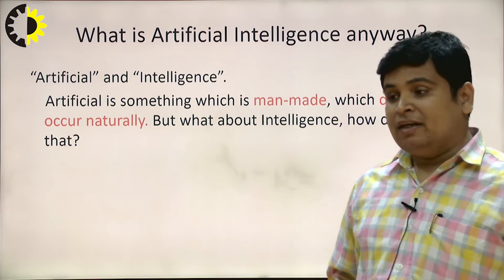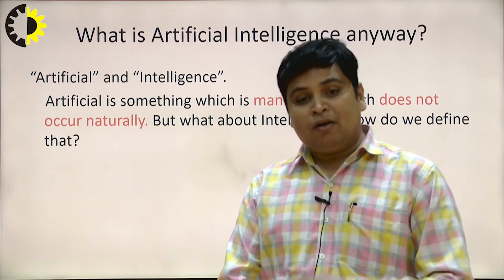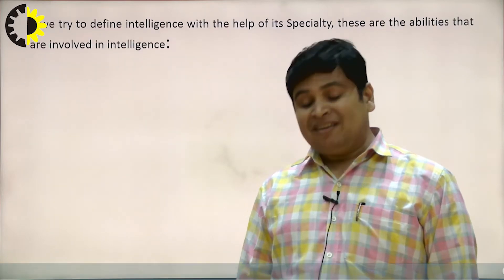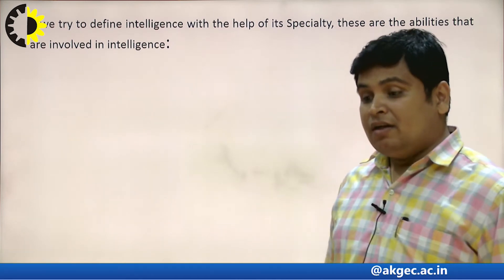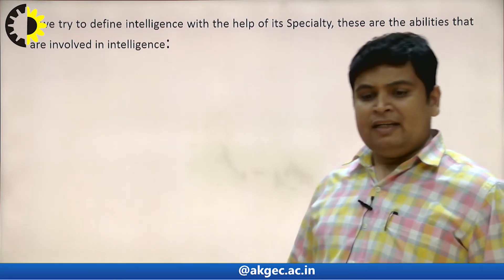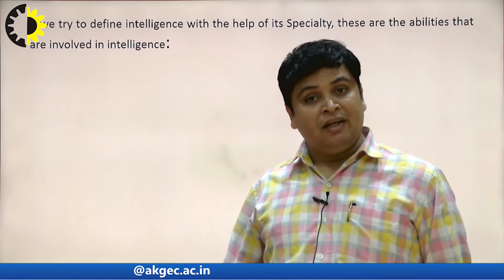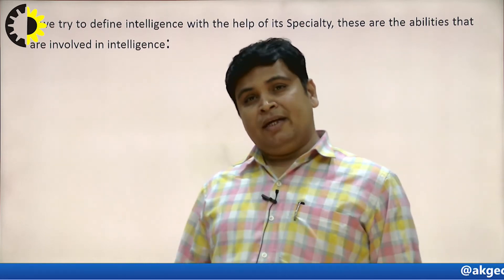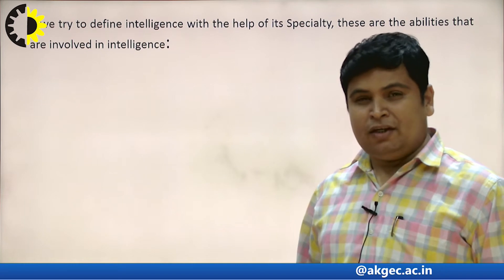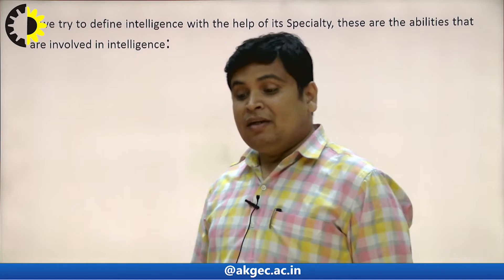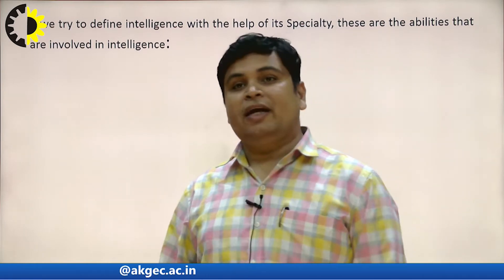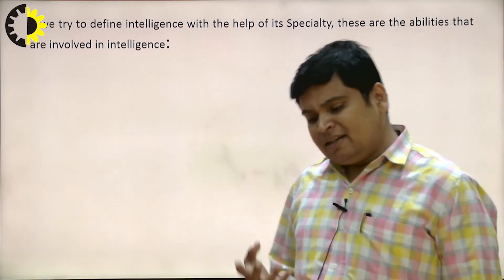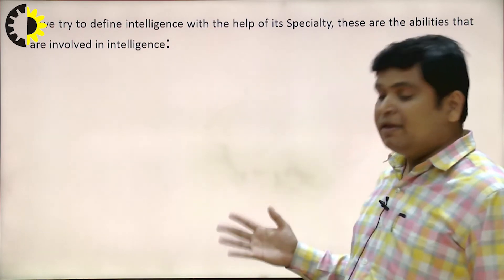We cannot easily define intelligence. There are n number of parameters when you are going to define intelligence. We can say humans are said to be intelligent, but the proper definition and proper outcome of intelligence we cannot analyse and we cannot define by words, because some pupils are intelligent in mathematics, some in coding, some students are intelligent in singing or dancing. Intelligence varies from one person to another. So we can make an artificial product, no issue at all, but putting intelligence inside that product is a very complicated task.